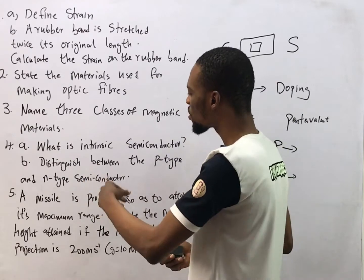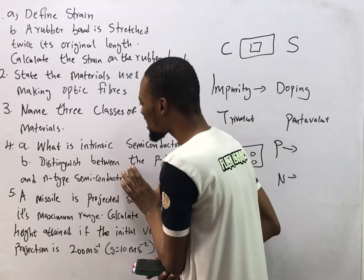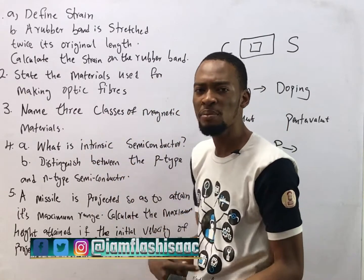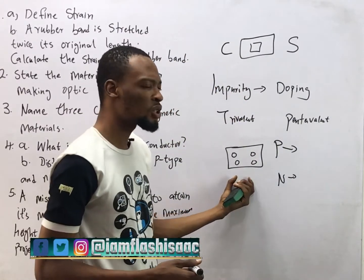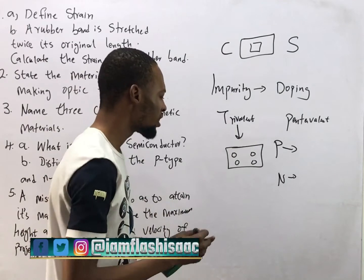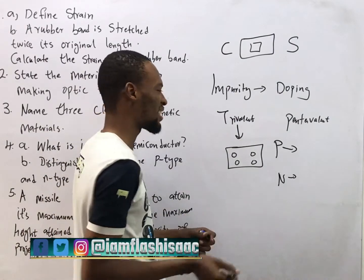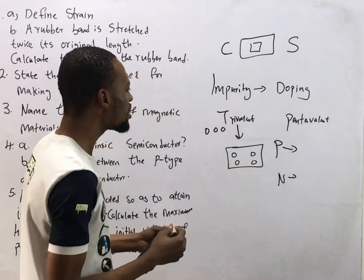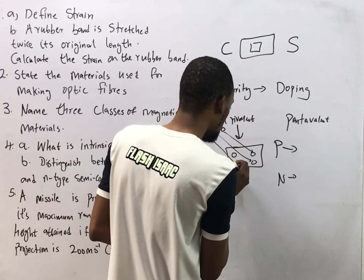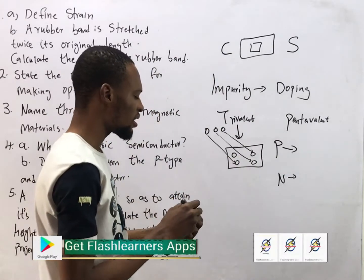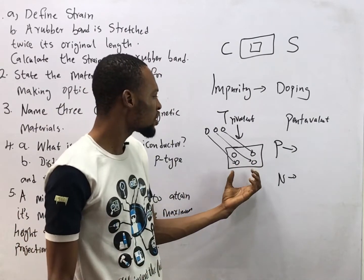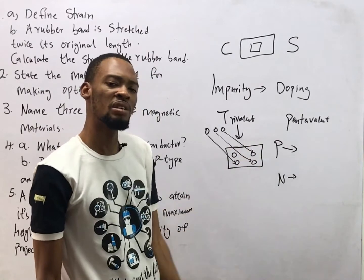P-type semiconductor is a type of semiconductor formed when the semiconductor is doped with a trivalent impurity — meaning the impurity element has three electrons in the outermost shell. With three electrons filling three bonds, there is a remaining hole. In p-type semiconductors we have more holes than electrons, so it is positively charged — hence p-type.